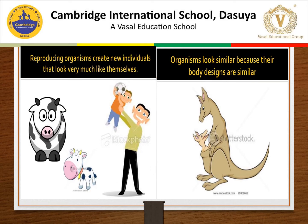Reproductive organisms create new individuals that look very much like themselves. Organisms look similar because their body designs are similar. All members of a species process the same blueprint for body design, which comes through interbreeding — they have received hereditary material having the same information about body design encoded in it. This hereditary material is copied and transmitted to the next generation during reproduction through gametes, and it maintains continuity between successive generations.